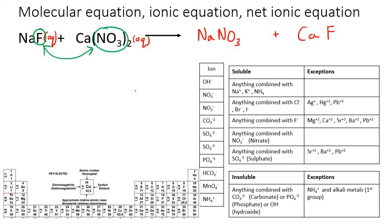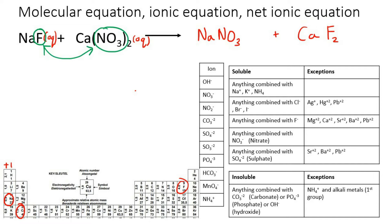If you look at Na, it's in group one, so its valency is positive one. NO3 you need to memorize as negative one. Calcium is in group two, so that's plus two, and fluoride is negative one. To check the valencies: Na and NO3 are perfect — one and one. But for Ca and F, we've got a two and a one, so you put the two as a subscript for F, giving CaF2. Remember, you don't write the number one — if it's one, you just leave it out. So that's going to be CaF2.